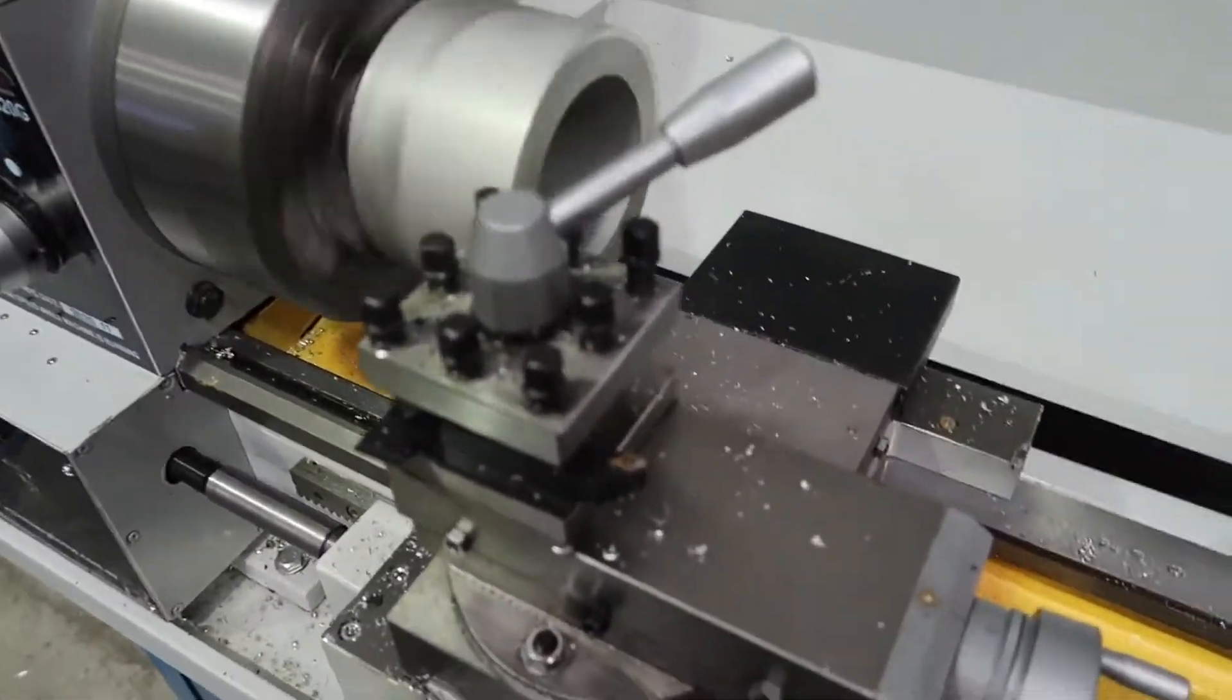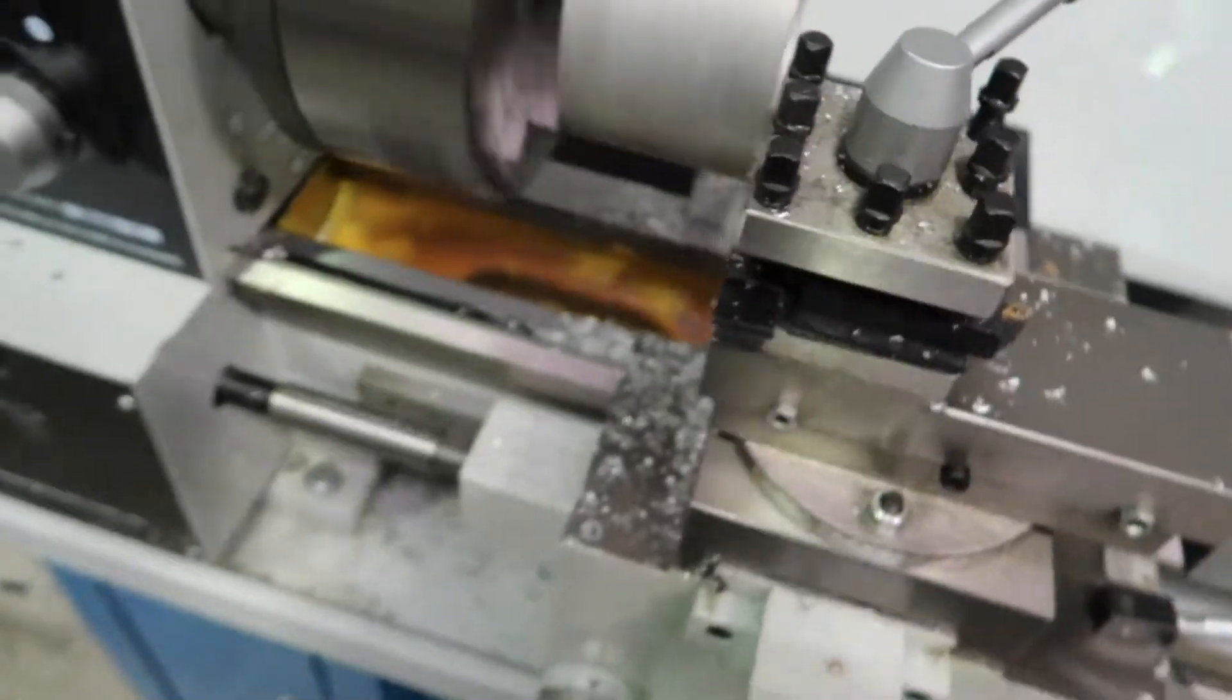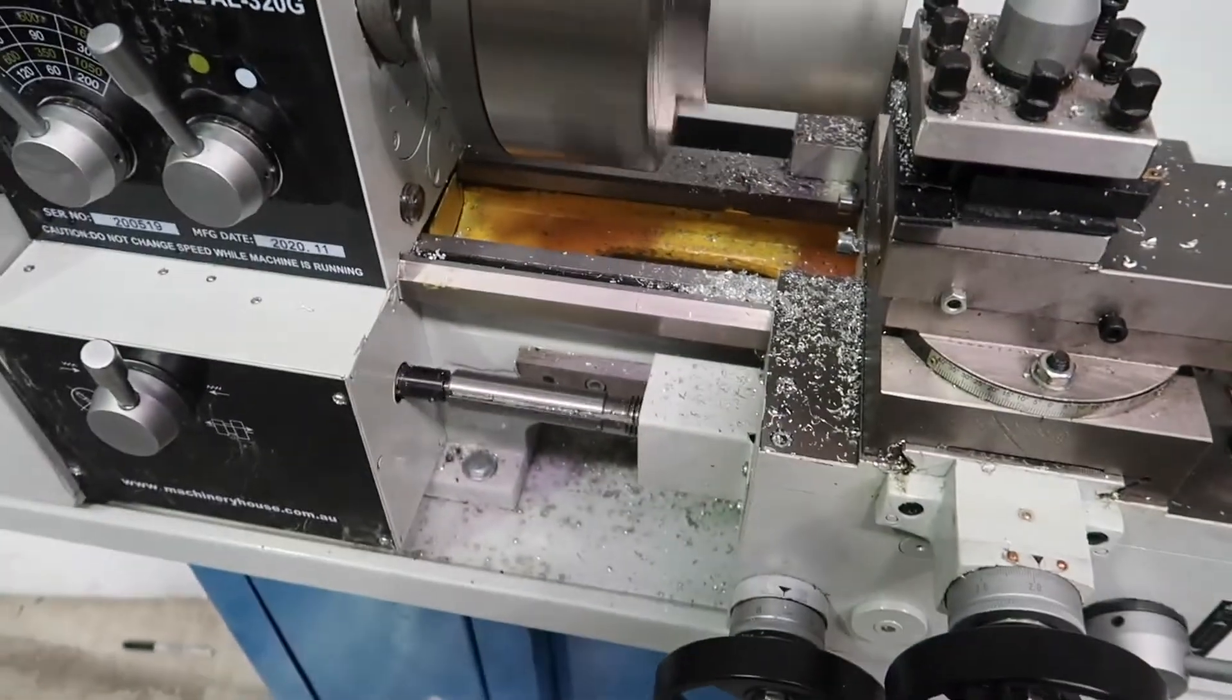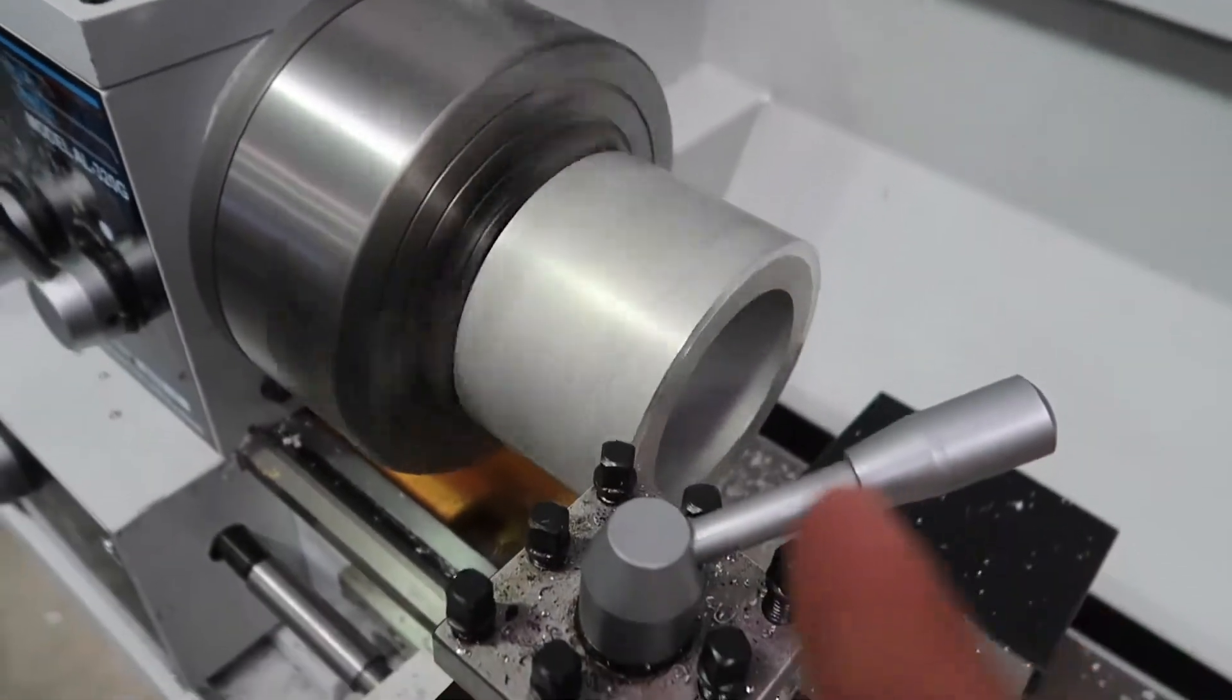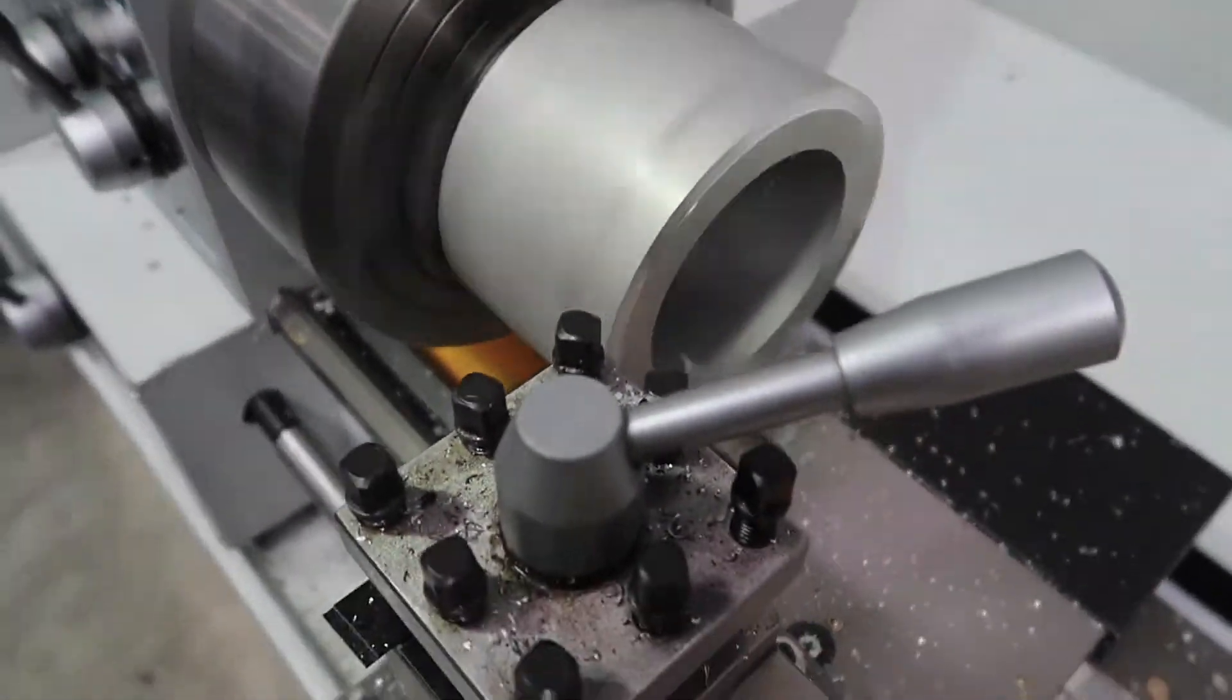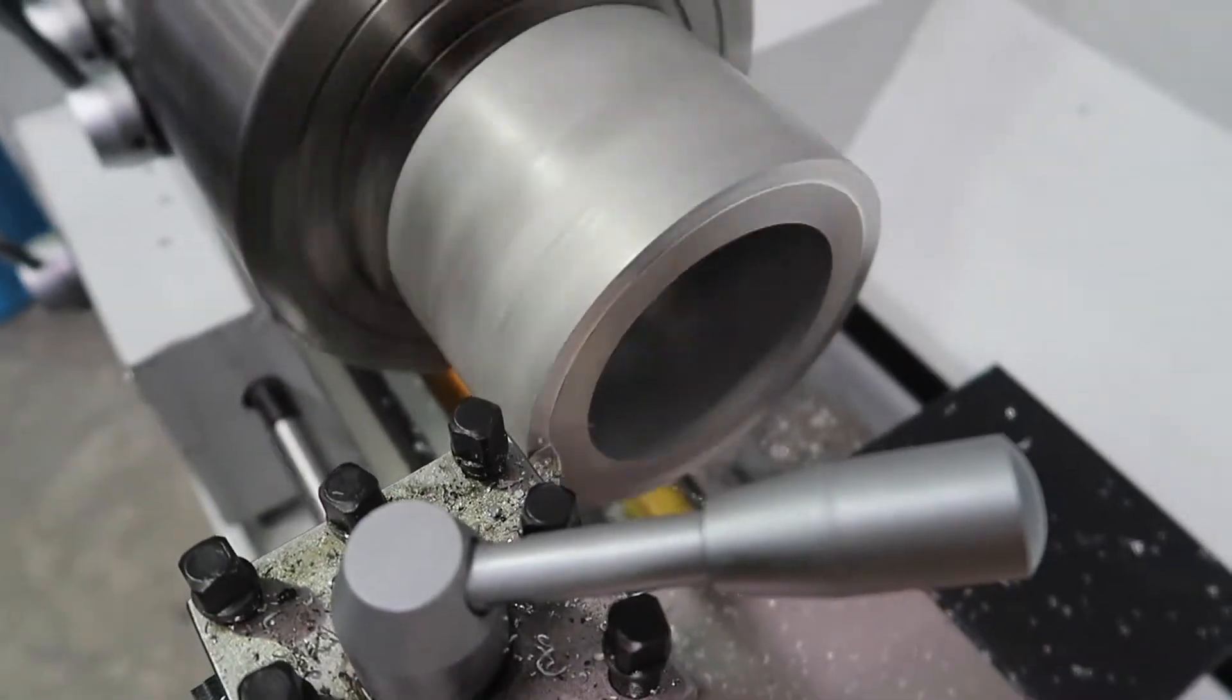All right, just to explain this, what we have going on is the auto feed of the lathe, which is this thing, is spinning this automatically and feeding the cutting tool into the workpiece. So you can see that happening there.